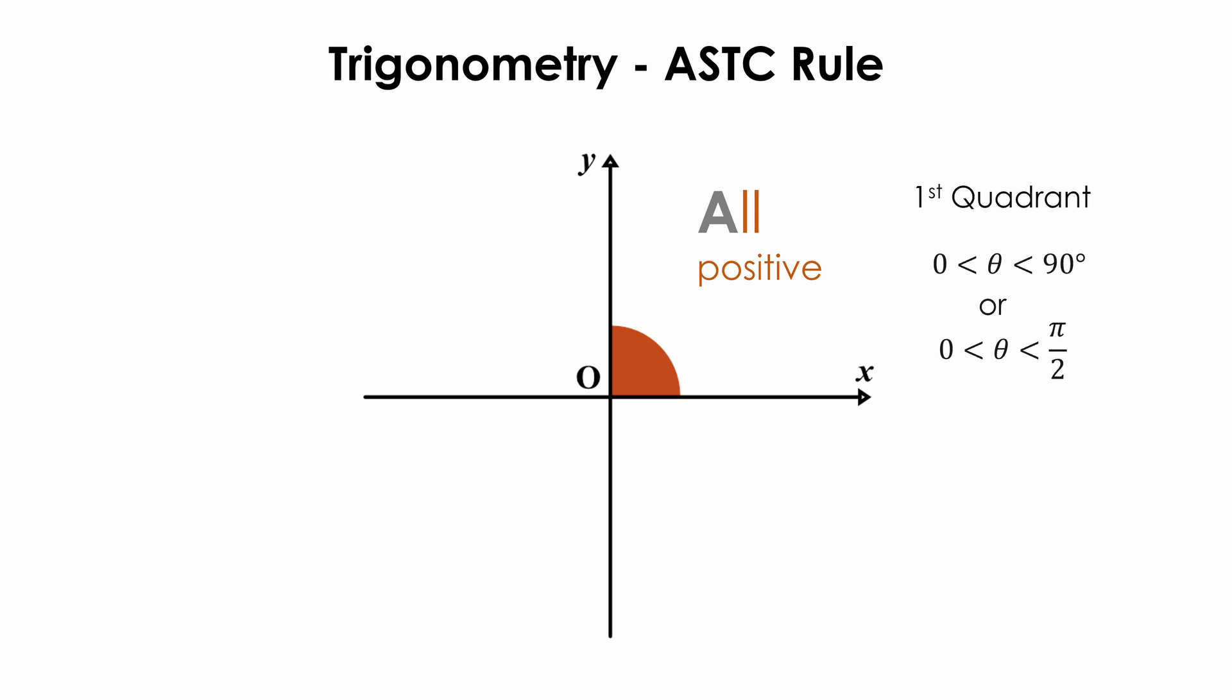For example, if you type in sine 23 degrees, cosine 88 degrees, or tangent 13 degrees into your calculator, they will all return a positive value.